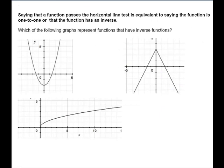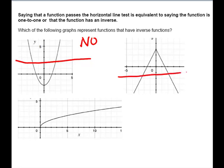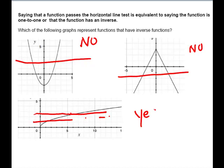Let's look at a few more graphs and see which have inverse functions. The first one is a parabola — we do the horizontal line test and it fails, so it does not have an inverse function. The absolute value graph — it's upside down, but it's an absolute value graph — also fails the horizontal line test, so no inverse function. The square root graph passes the horizontal line test, so yes, this one will have an inverse function.